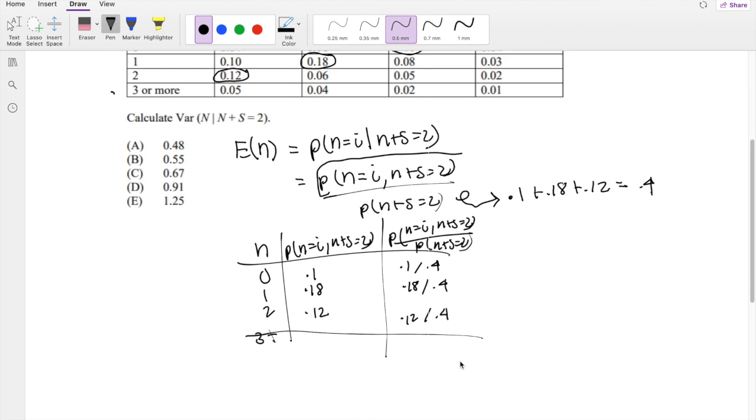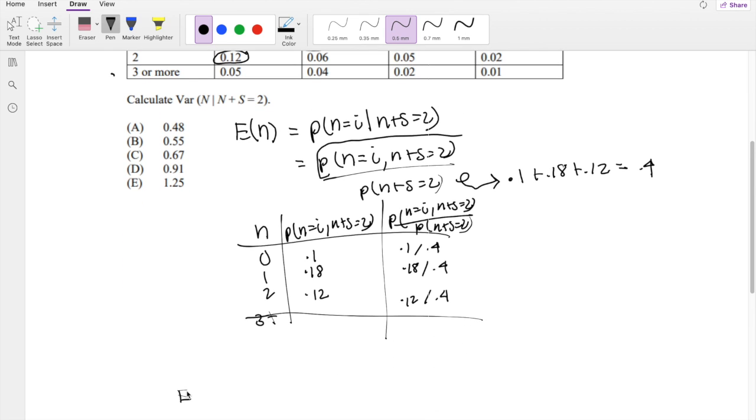Now, the expectation is super easy. Expectation of n, if we're trying to be technical here, is equal to the n value times its probability. The first one with n equals 0 is just going to be 0, so I'm not going to even bother writing it down.